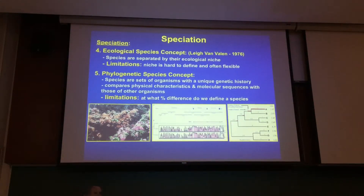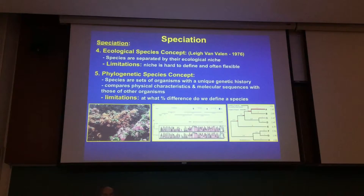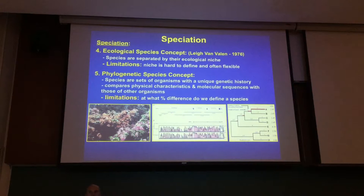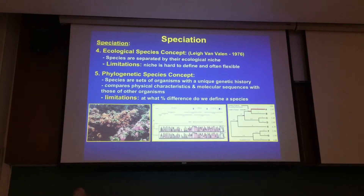By far one of the most powerful techniques is number five — the phylogenetic species concept. It establishes the separation of organisms based on their unique genetic histories at a molecular level, comparing physical characteristics of molecular sequences within those organisms. There are a bunch of different techniques for doing that. Have you guys done a DNA hybridization yet in lab?